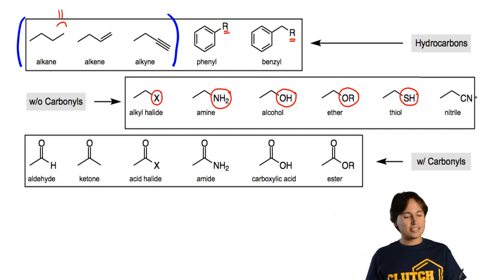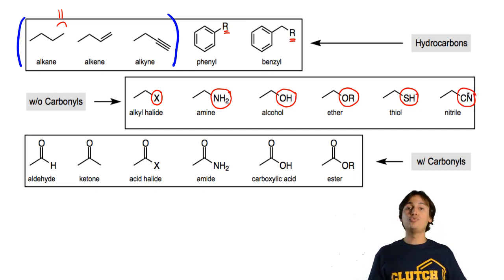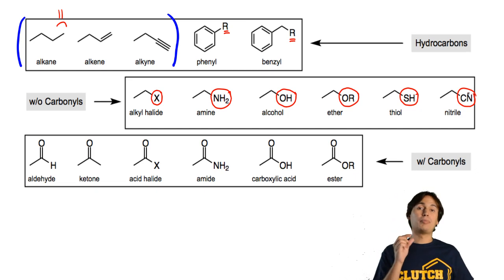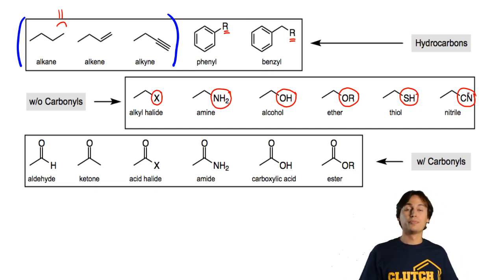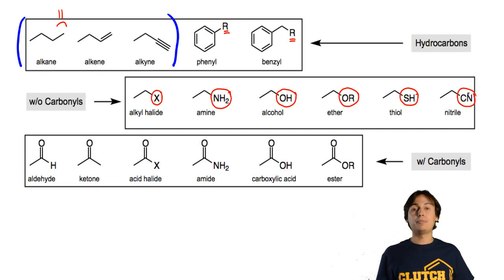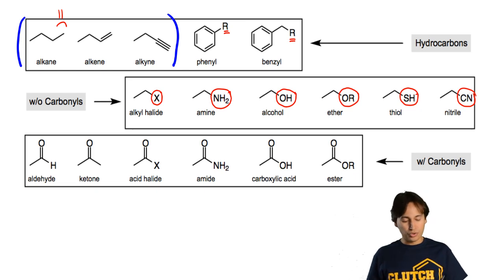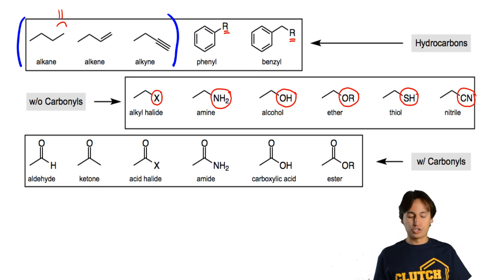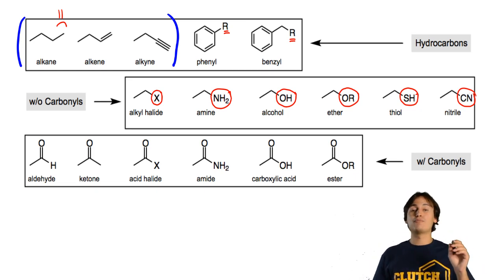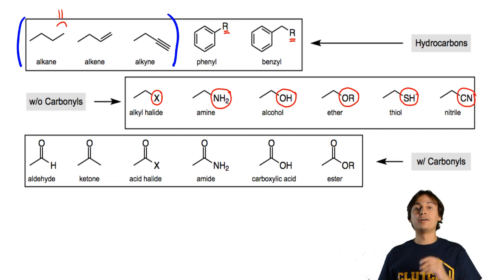And lastly, if you were to use a C triple bond N as your functional group, that would now become a nitrile. So those are the functional groups we can create when attaching heteroatoms with a single bond to carbon.